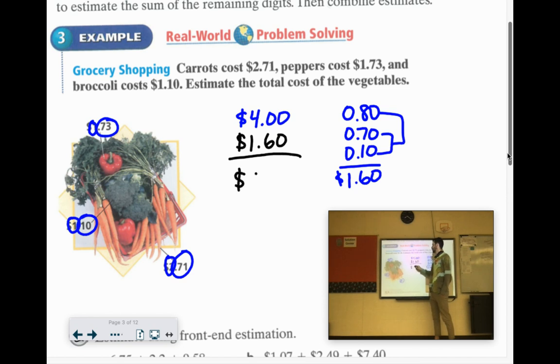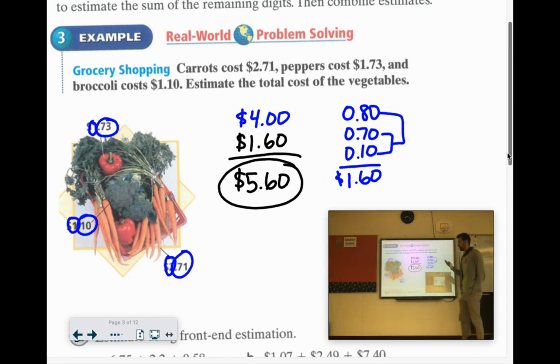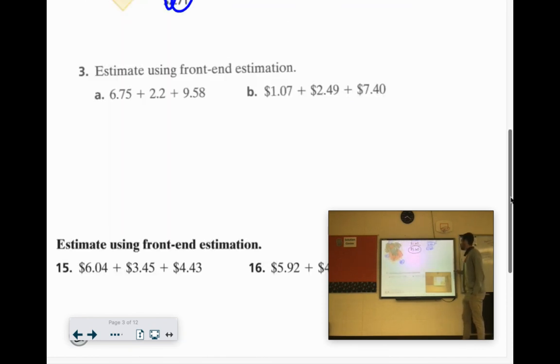So we're going to add that in to our $4. And that will give us an estimate of $5.60. Will it be exactly that? No. But is that pretty darn close? Let's see. That's a pretty close estimate. It comes out to like $5.50. So that's a pretty close estimate.